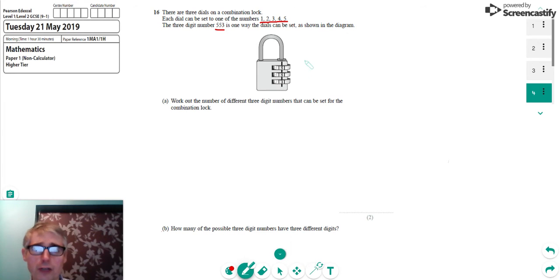But each one of these dials could be set as any of these numbers: 1, 2, 3, 4, and 5. So work out the number of different three-digit numbers that can be set for the combination lock.